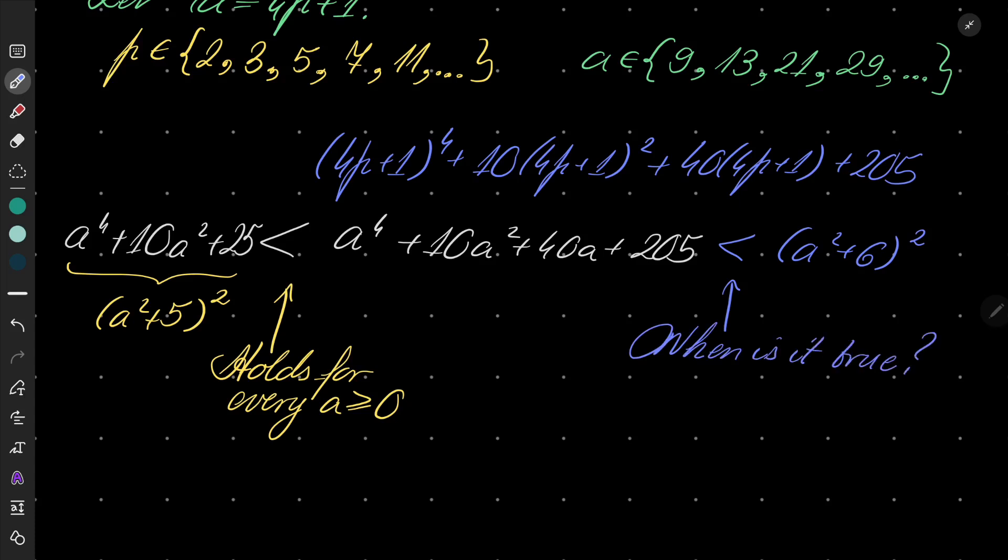Because think about it, if this double inequality is to be true, then our number is between two consecutive squares. So this expression cannot be a square. So the idea is to remove infinitely many possibilities and to be left with only a few possible values of a for which our expression can be a square.